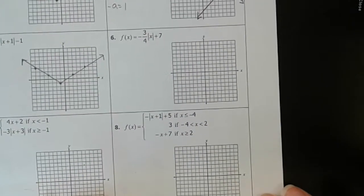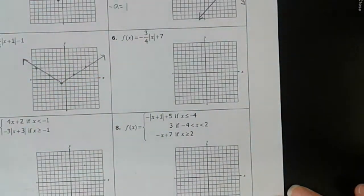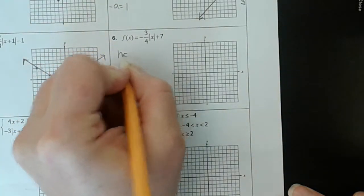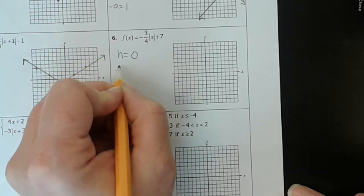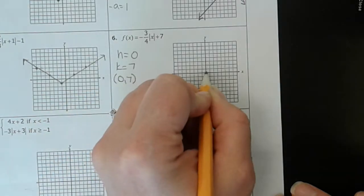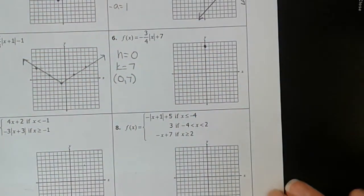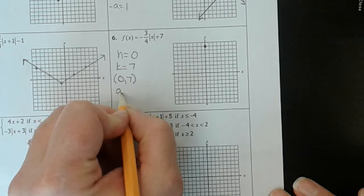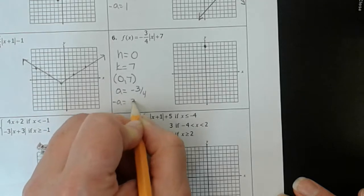Let's take a look at this one. If we look at it right here, it's got a negative in front of the slope, which means we know it's going to open down. So we don't even have to think about which way to graph our lines — we just know it opens down. H: well, there's nothing in there with x, so that's x minus 0. K equals 7. So our vertex is at 0, 7.